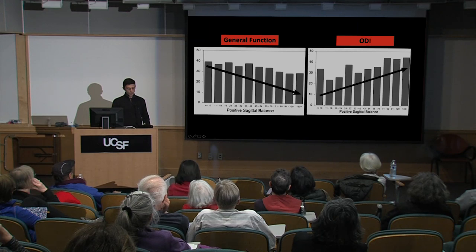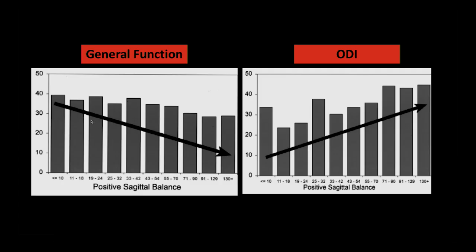Our field has published quite a bit on the functional limitations of this sagittal plane deformity. Looking at scores for general function, as you start to lean more and more forward, your general function declines significantly. And looking at a disability index in relation to your low back, as you lean more forward and have more difficulty standing upright, your disability index also rises. This can all be a consequence of arthritis.